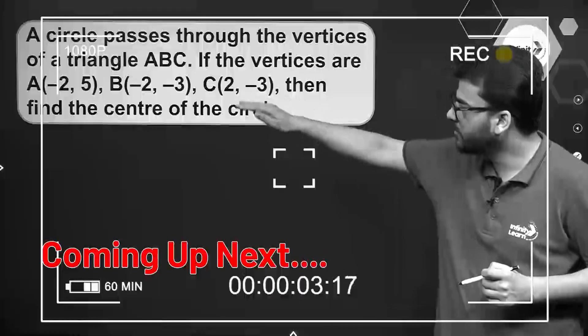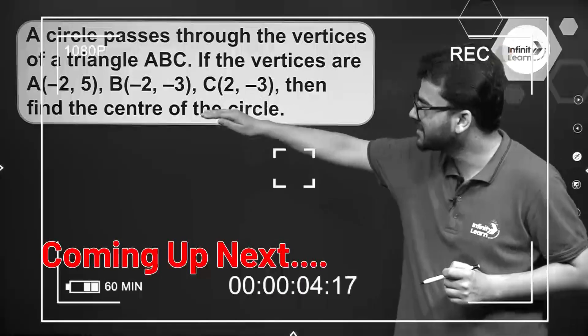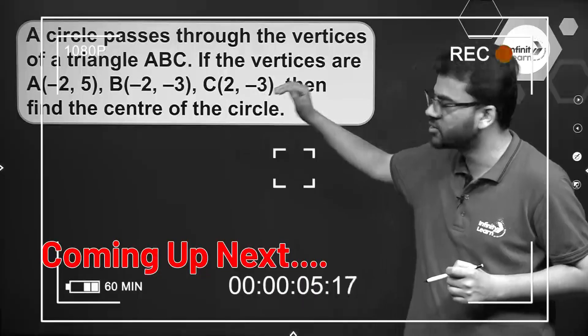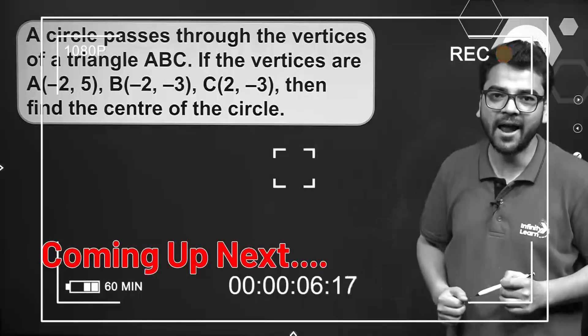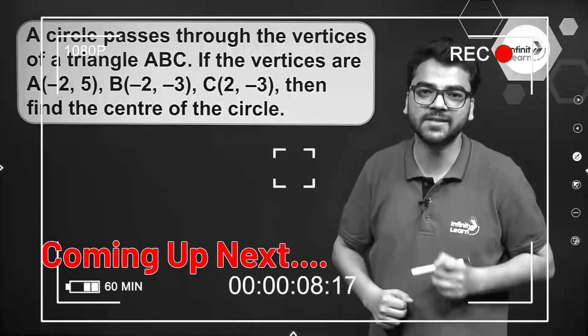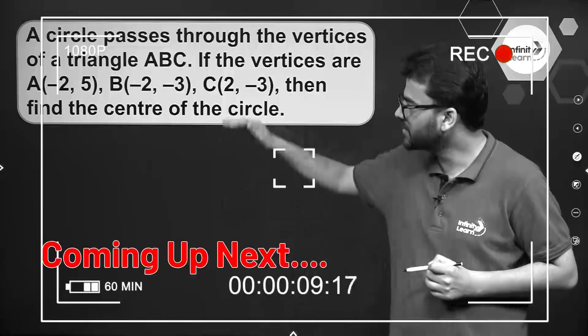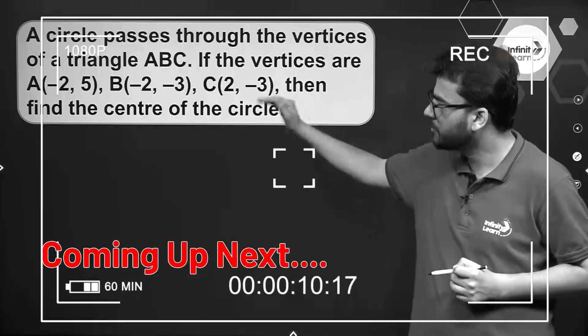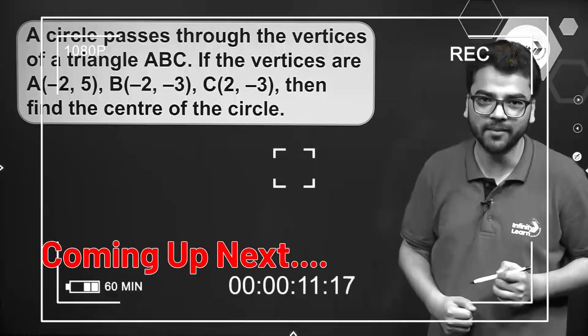We are given the vertices of a triangle and we have to find the center of a circle passing through these points.